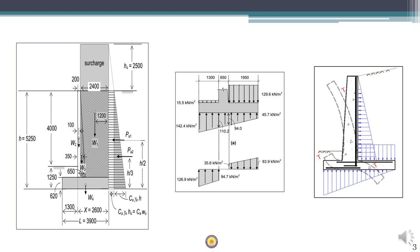Before continuing with detailed designing, it is important to note that each of the elements — toe, heel, and stem — is to be designed as a cantilever slab subjected to varying load. The toe slab is subjected to a net upward force, which means that the toe slab bends upward and it is supported at the common junction. Since the beam bends upward, the tension side is on the bottom side and hence the reinforcement is given in the bottom face.